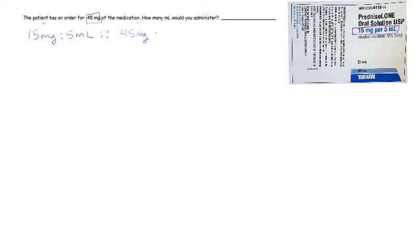You do want to put 45 milligrams in the first position over here because we have milligrams in the first position over here, and then we will put x milliliters because that is what we are solving for. We're trying to find out how many milliliters we're going to give the patient. Milliliters is in the second position in the first ratio, so it must be in the second position in the second ratio.